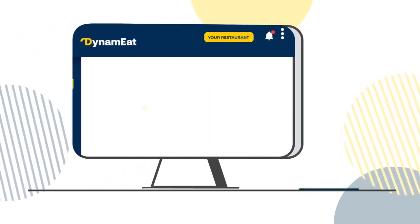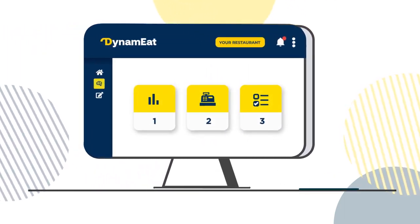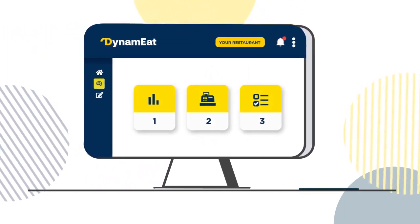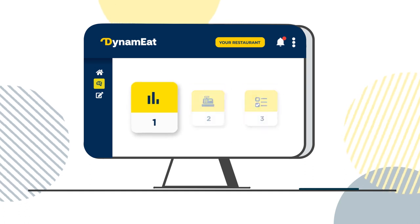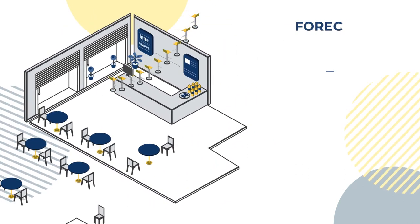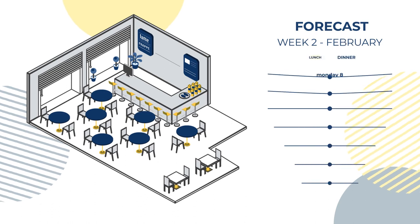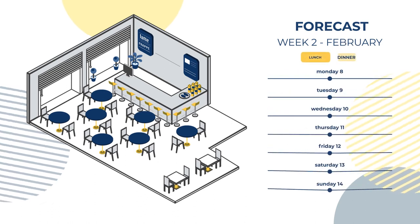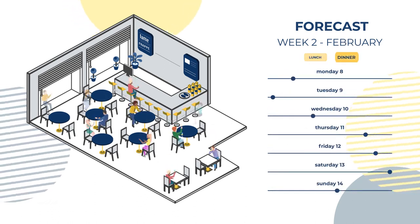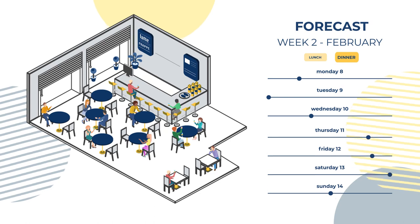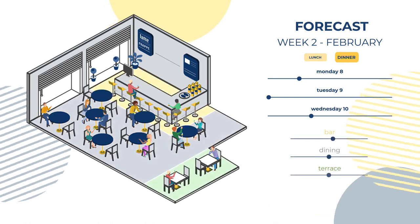Dynameat's platform is really simple. In three quick steps, you can elaborate the optimum menu for your restaurant. First of all, the model makes a forecast of the total diners for the next days of the week, differentiating between lunch and dinner and between the multiple areas of the restaurant.